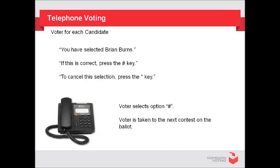Once you've made your selection, you will hear: 'You have selected Brian Burns. If this is correct, press the pound key. To cancel this selection, press the star key.' The voter selects the pound key and is taken to the next contest on the ballot.